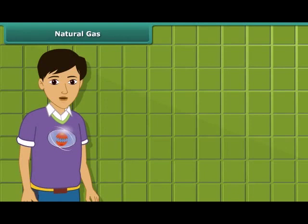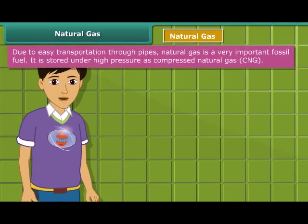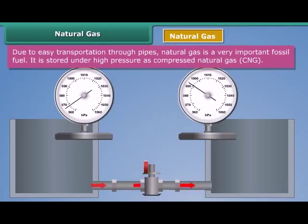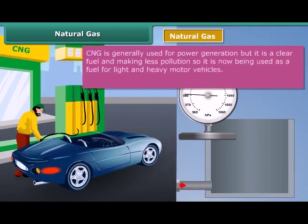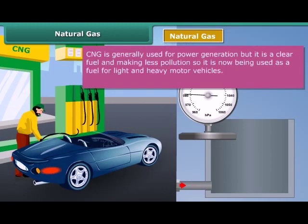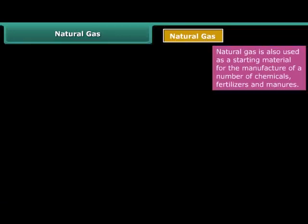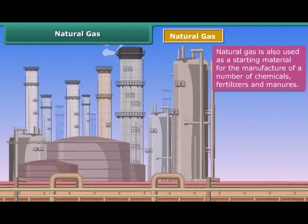Now let us move on to our next exhaustible natural resource: natural gas, also known as compressed natural gas or CNG. It is stored under high pressure as CNG. CNG is generally used for power generation, but due to being less polluting it is also used as a fuel for vehicles and for cooking purposes. Natural gas is also used as a base material for the manufacture of chemicals and fertilizers.